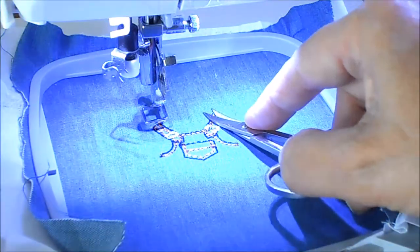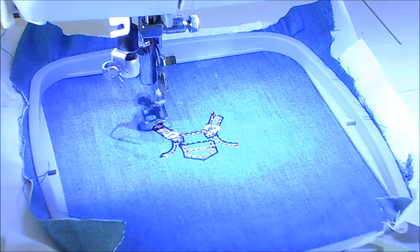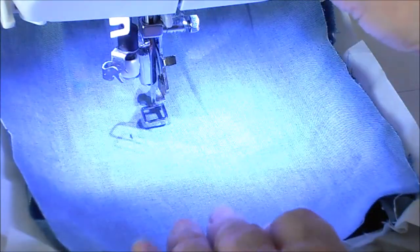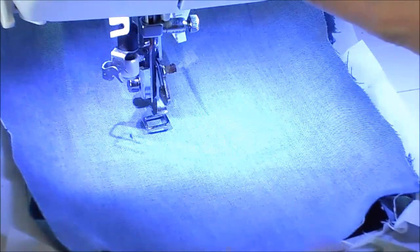Before I sew the last color of the design, I'll take another piece of lightweight denim fabric and place it right side down over the top of the embroidery. Then I'll finish sewing the rest of the design, which is the outer seam.